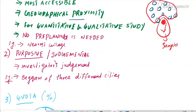Next we have purposive or judgmental sampling. This depends on the investigator's judgment. The researcher has certain things in mind and selects the sample as per their notion, knowledge, and theory aligned with the study objectives — not based on what is nearest or most accessible.